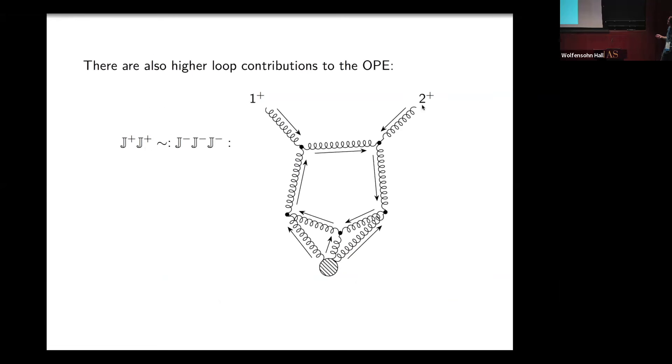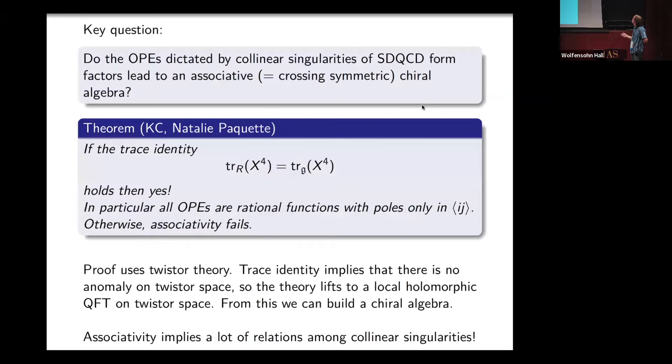One can go even further. Just by writing down the Feynman diagrams you can write in the self-dual theory, there's going to be a J plus, J plus goes to J minus minus, accompanied by this kind of unpleasant three-loop thing. And that's pretty hard to compute.